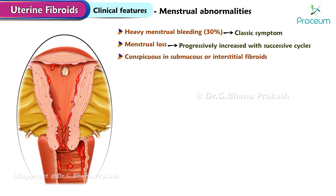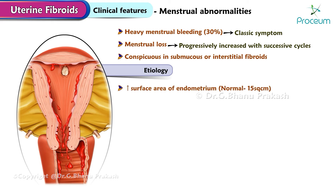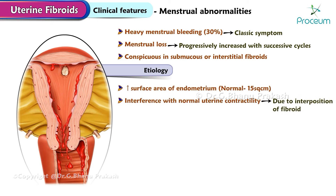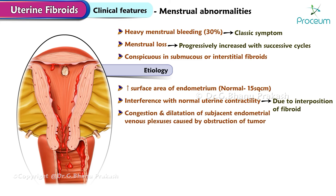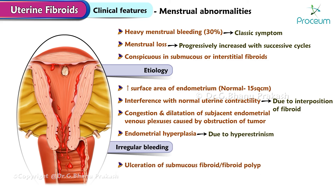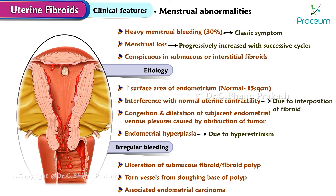It is conspicuous in submucous or interstitial fibroids. The causes are increased surface area of the endometrium (normal is about 15 square centimeters), interference with normal uterine contractility due to interposition of fibroid, congestion and dilatation of the subjacent endometrial venous plexus caused by obstruction of the tumor, endometrial hyperplasia due to hyperestrinism. Irregular bleeding may be due to ulceration of submucous fibroid or fibroid polyp, torn vessels from the sloughing base of a polyp, or associated endometrial carcinoma.